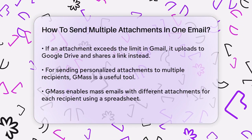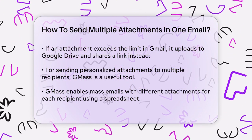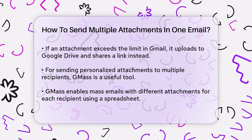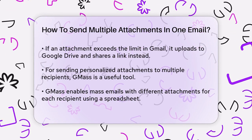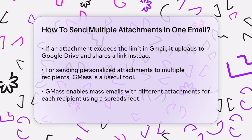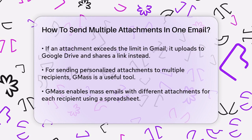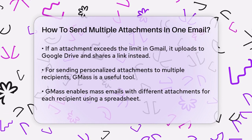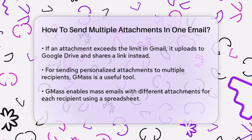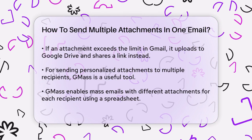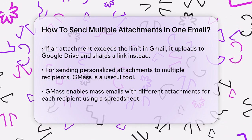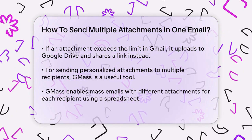For more complex scenarios, such as sending personalized attachments to multiple recipients, tools like GMAS can be very helpful. GMAS allows you to send mass emails with different attachments for each recipient. You can use a spreadsheet to list the recipients and the corresponding attachment files. For instance, if you need to send monthly invoices to customers, you can set up a column in your spreadsheet with the file names or URLs of the invoices, and GMAS will attach the correct file to each email.